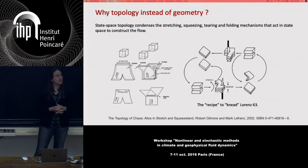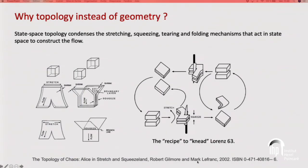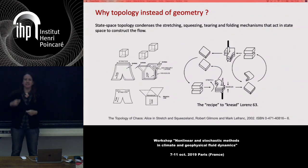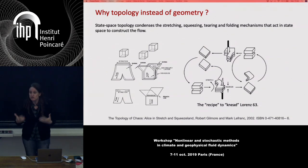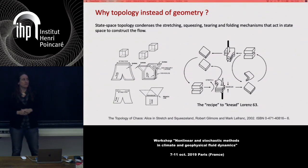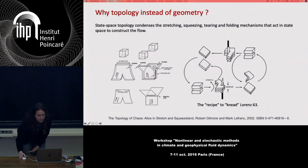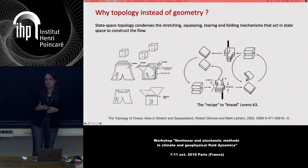These images come from the book by Gilmore and Mark Lefranc, a 2002 book they baptised 'The Topology of Chaos: Alice in Stretch and Squeeze Land.' This image illustrates that in state space, the stretching, squeezing, tearing, and unfolding mechanisms that construct a flow are topological in nature. What you see on the right is the recipe to knead the Lorenz 63 attractor — you have cubes in state space and you cut, fold, or stretch them, and these procedures are topological.